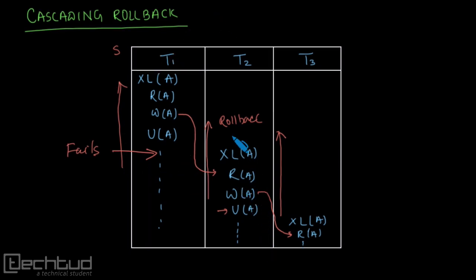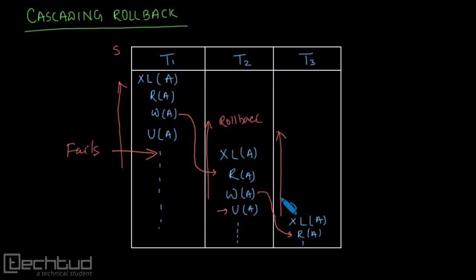So we have studied the three problems with basic 2PL: first, unnecessary wait due to early locking; second, deadlock; and third, cascading rollback. Due to all these problems, we will define some extra rules to solve them. In the next lecture we will study the conservative two-phase locking protocol.